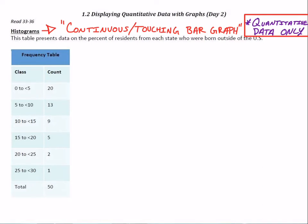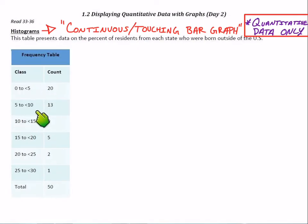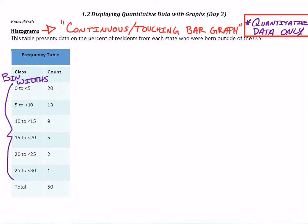The frequency table here has data on the percent of residents from each state who were born outside of the U.S. We're going to organize these into a histogram. The class tells us how we classify each state — so 0 to 5 percent, 5 to 10 percent, 10 to 15 percent. Those are going to represent our bin widths.